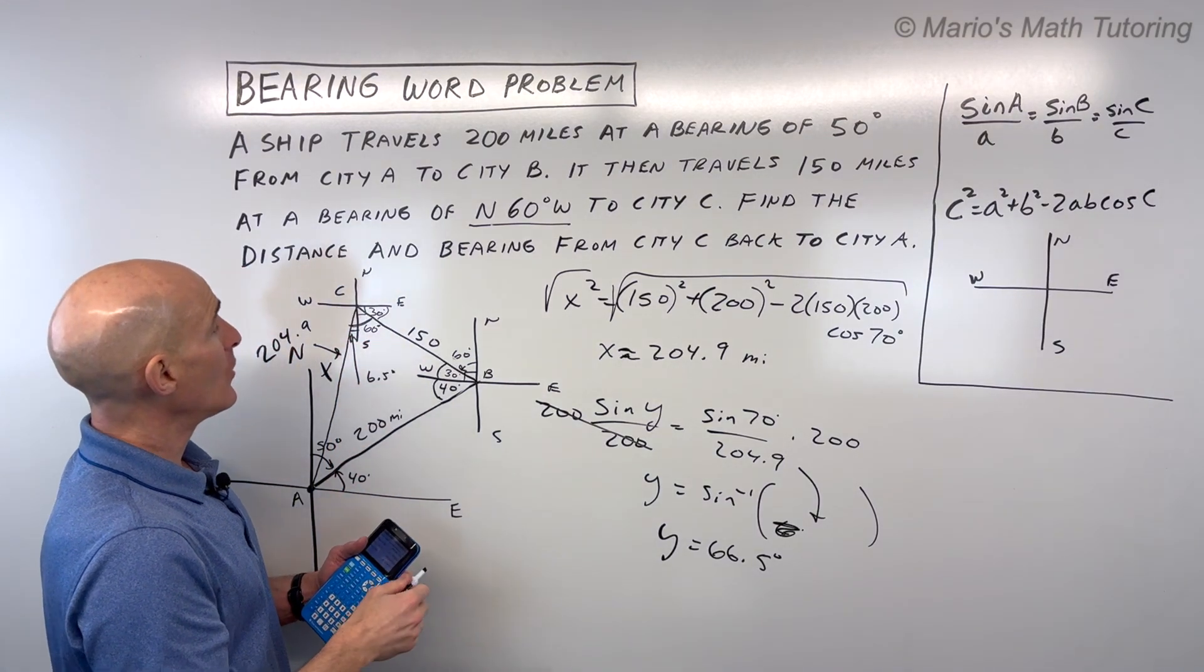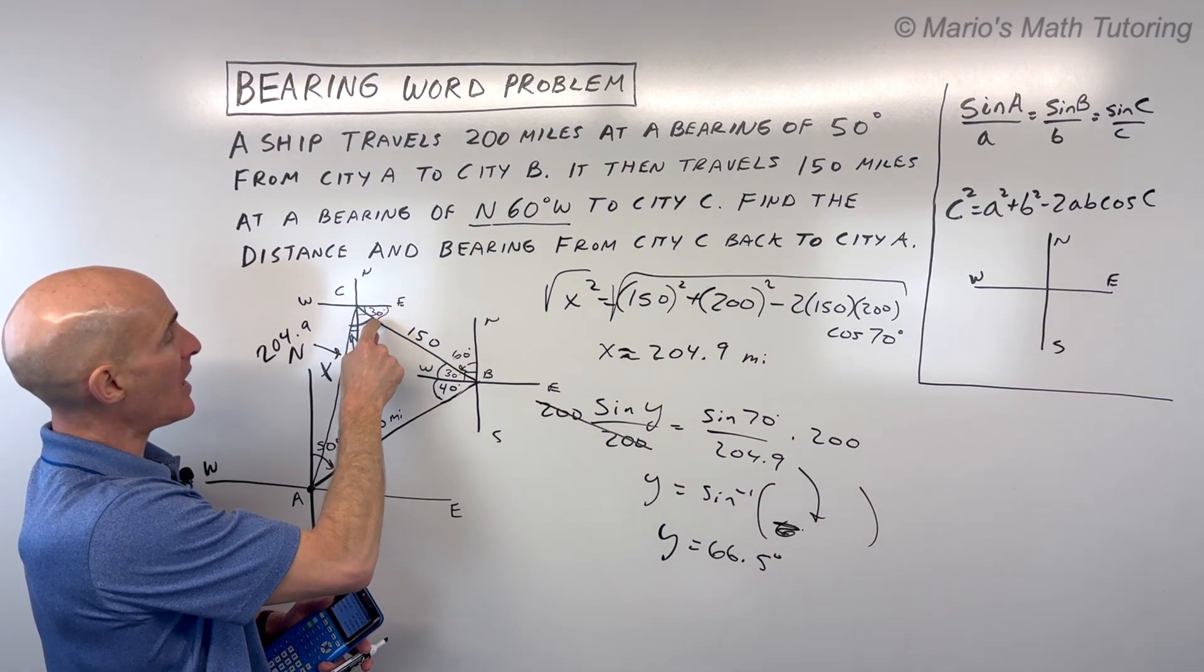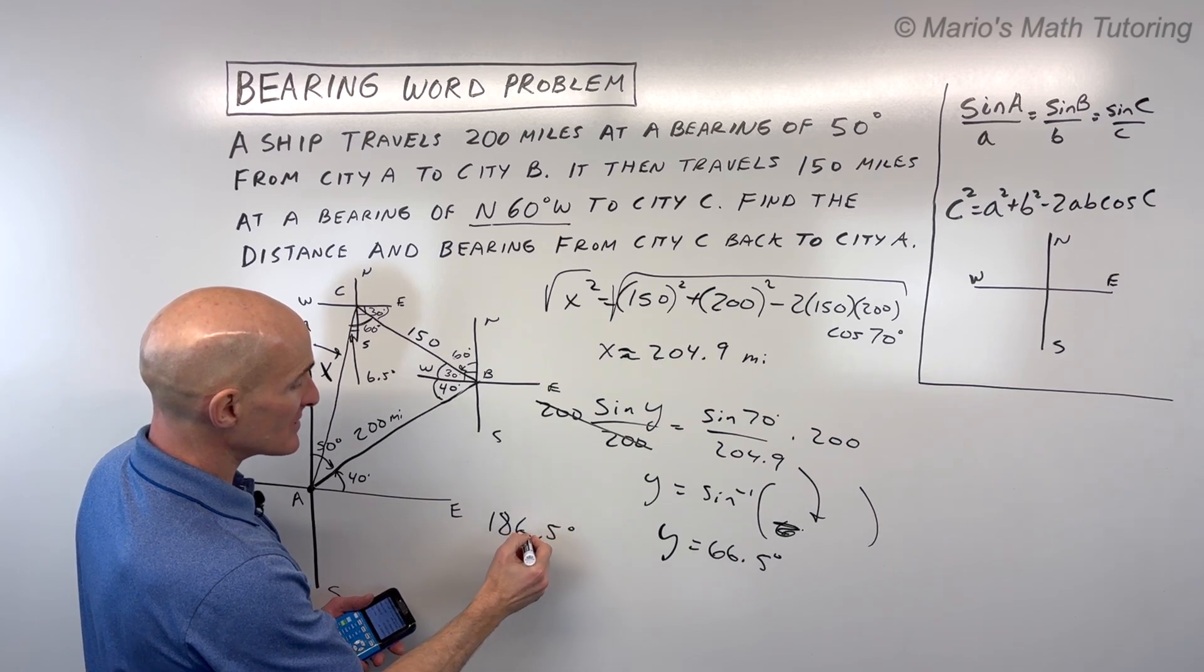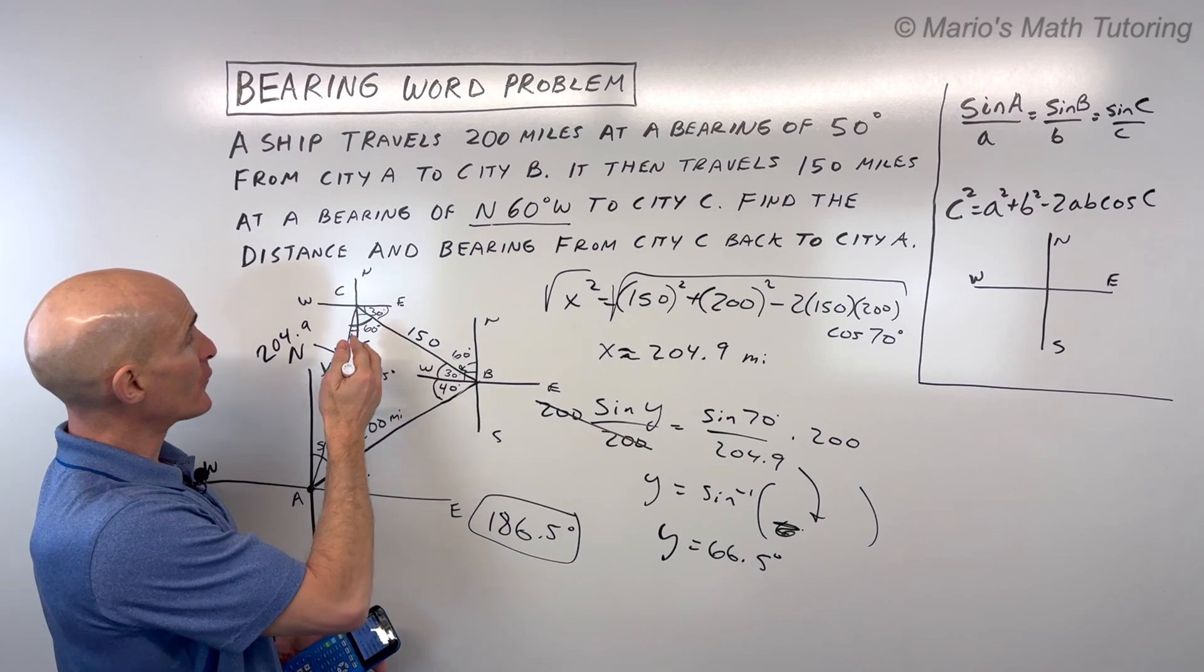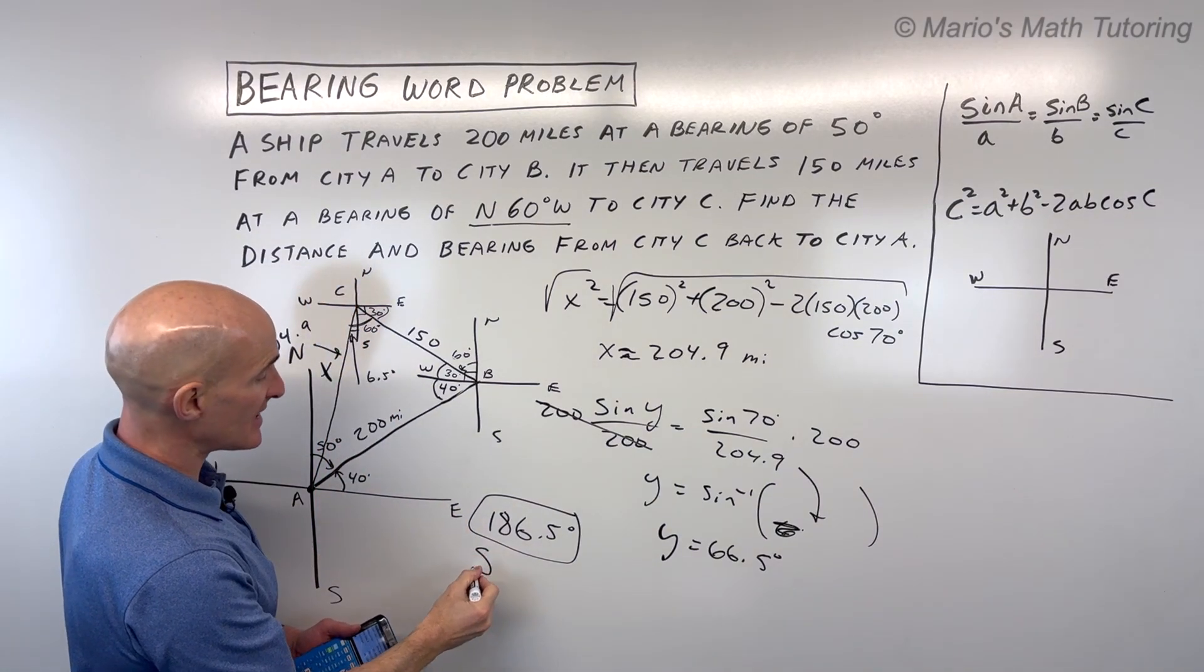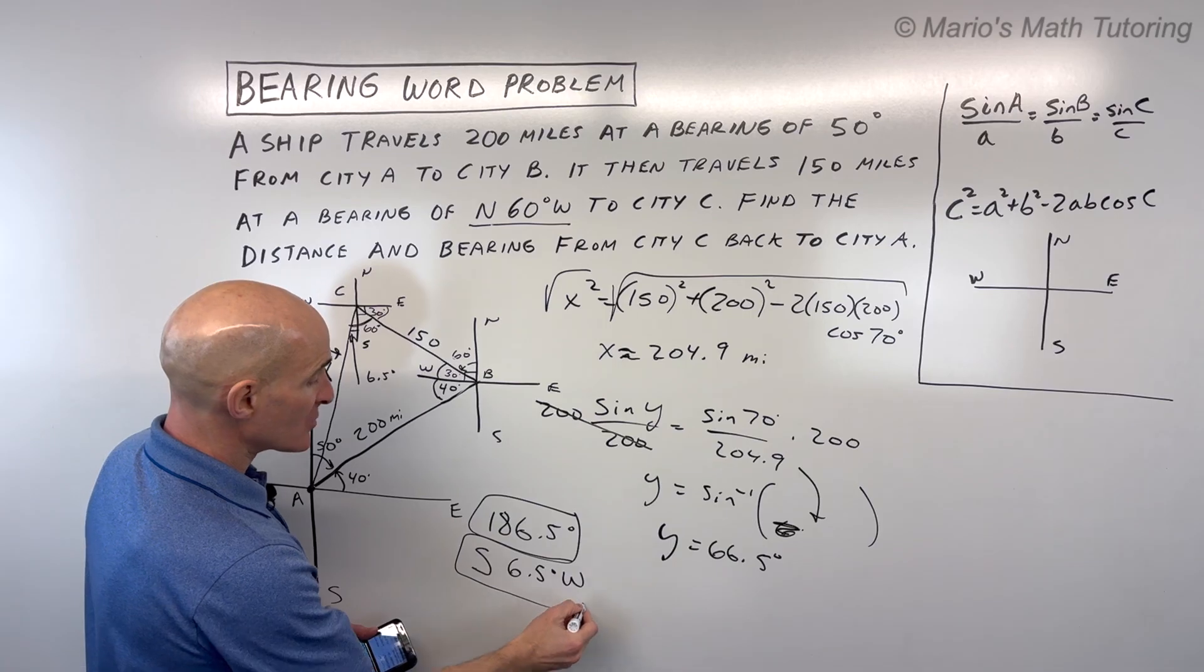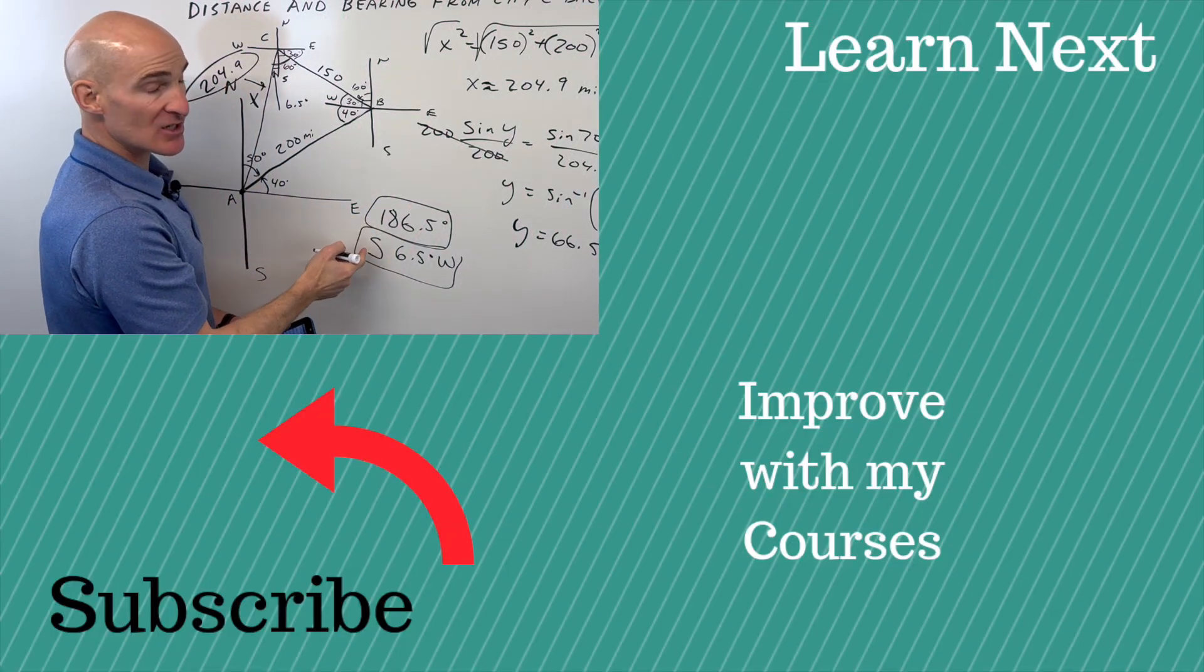Now that's interesting because to find the bearing we're measuring from north clockwise. So I'm going 180 plus 6.5 degrees more. So the bearing is 186.5 degrees. That's one way to state the bearing. The other way to state the bearing is to use either facing north or south. In this case, we're closer to the south. So I could say south, and then we're heading 6.5 degrees towards the west. And so this is our direction. This is our distance, 204.9 miles. This is our bearing. You can state it two different ways.